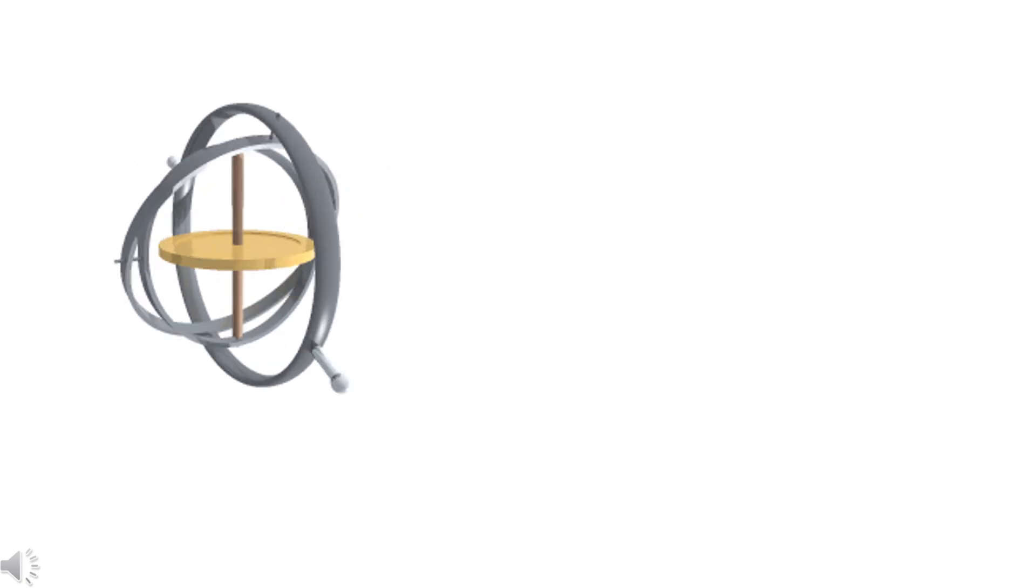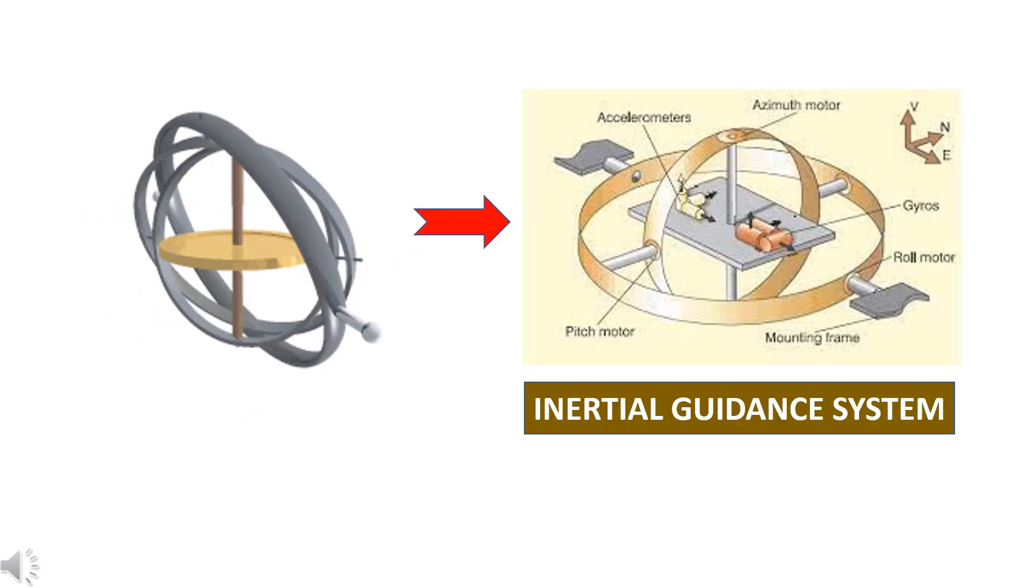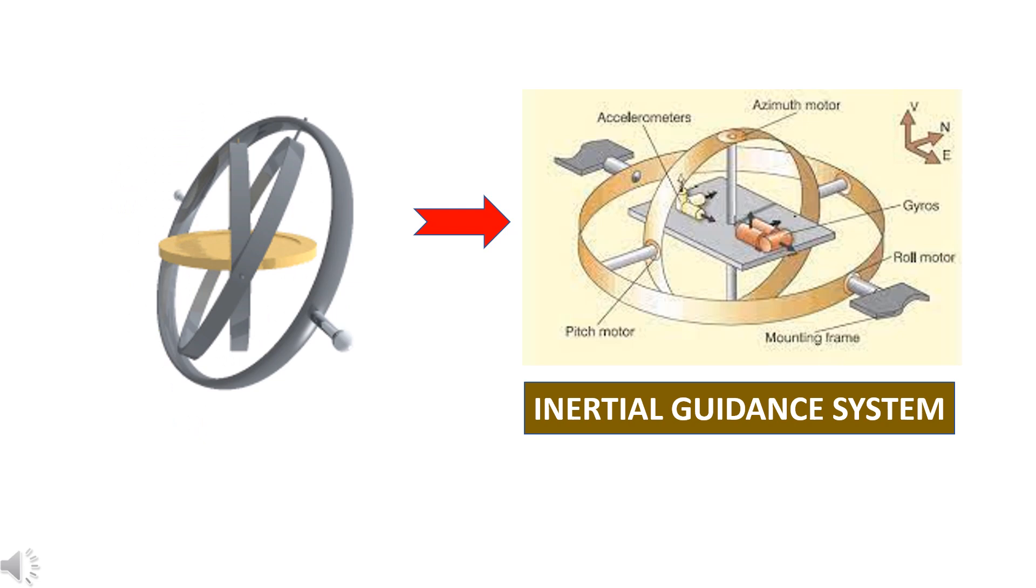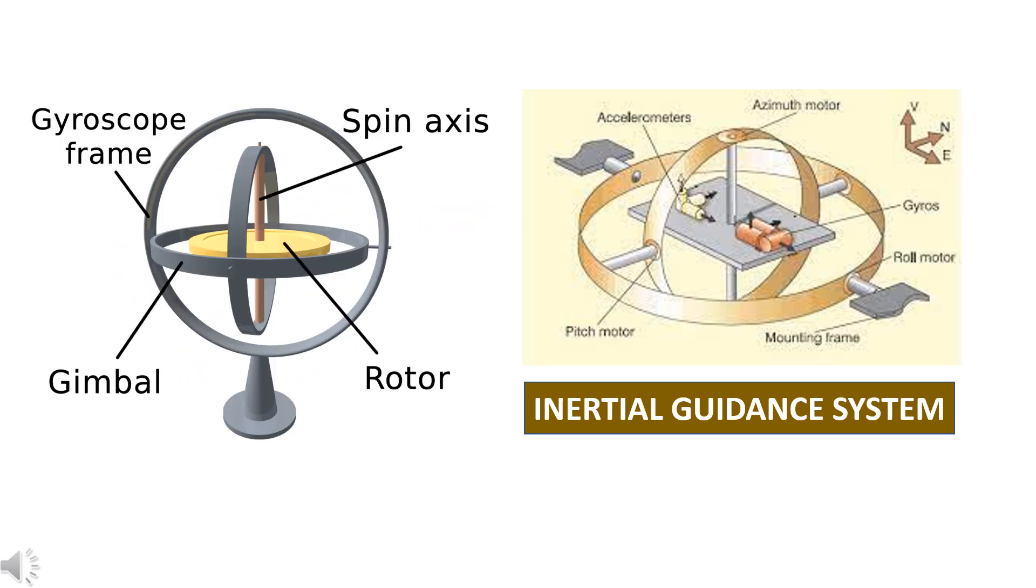A gyroscope used in inertial guidance systems makes use of this property of angular momentum. Gyroscope consists of three gimbals as shown here. In the center, we have the spinning disc. The spinning disc is mounted on the innermost gimbal.